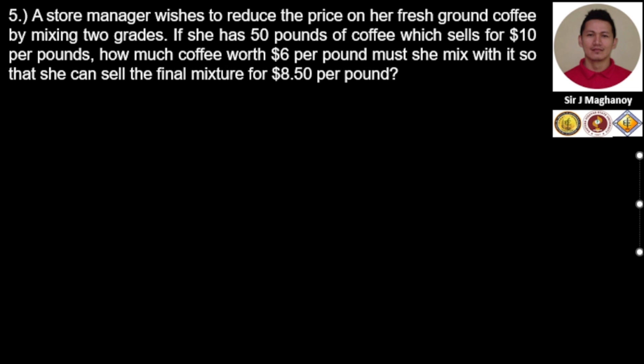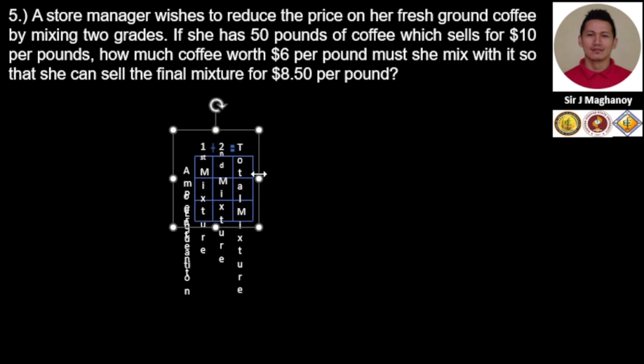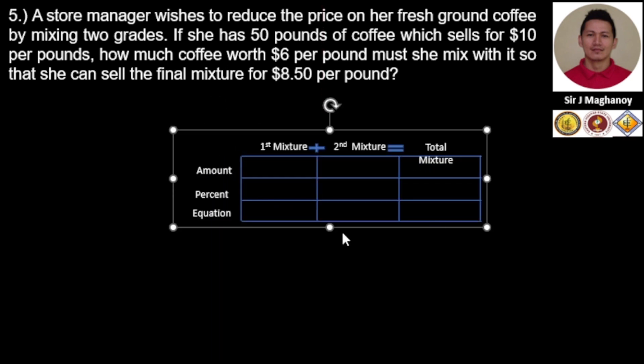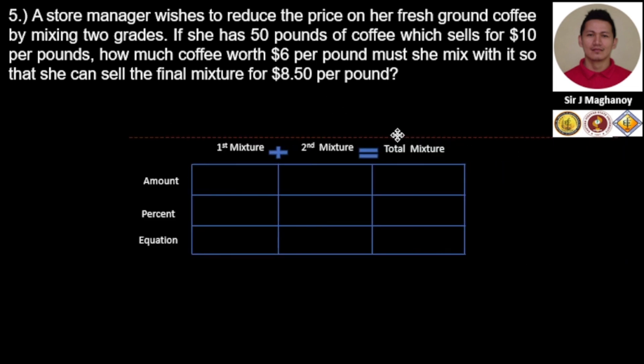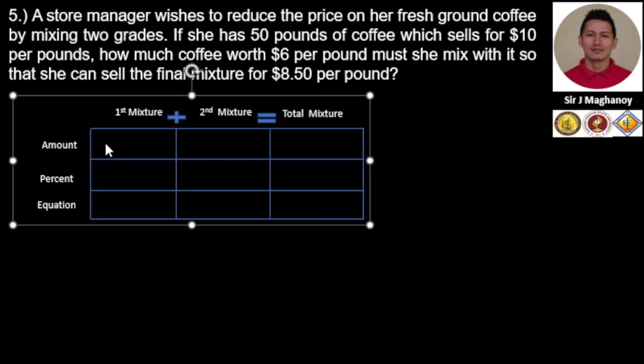We'll use a mixture table to formulate our equation. The amount will be in pounds, and the percentage will become the price of the coffee in dollars.